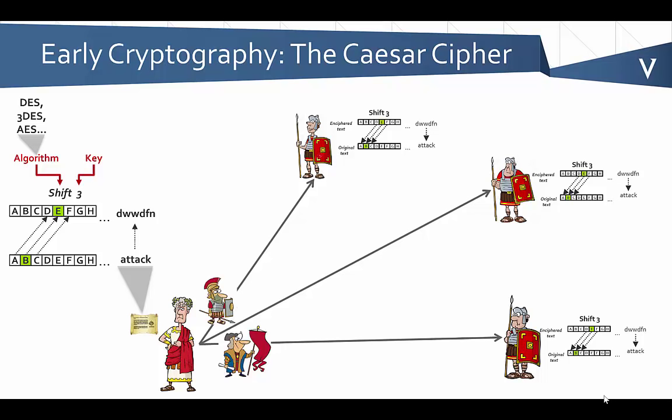The keys that we have are chosen from much larger domains. So instead of only having 25 options, in the case of today's keys, if we're using 128 or 256-bit keys, we have a much larger number of possible values to pick from. If we even just look at 2 to the 128, that equates to this number — it's a very large number.